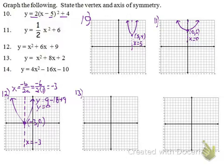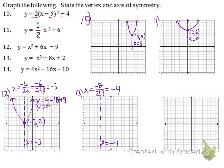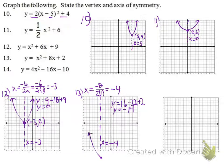Number 13, same idea. We do negative b over 2a: negative 8 over 2 times 1, which is negative 4. So x equals negative 4. We plug that into our equation and get y equals 16 minus 32 plus 2, which is negative 14. That's out of our graph range but the vertex is at negative 4, negative 14.